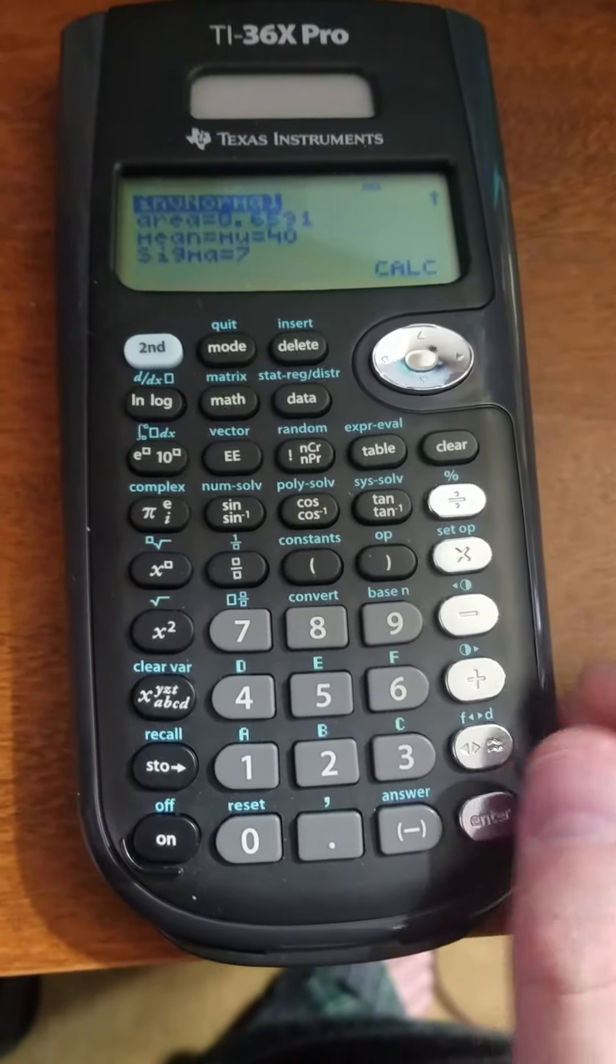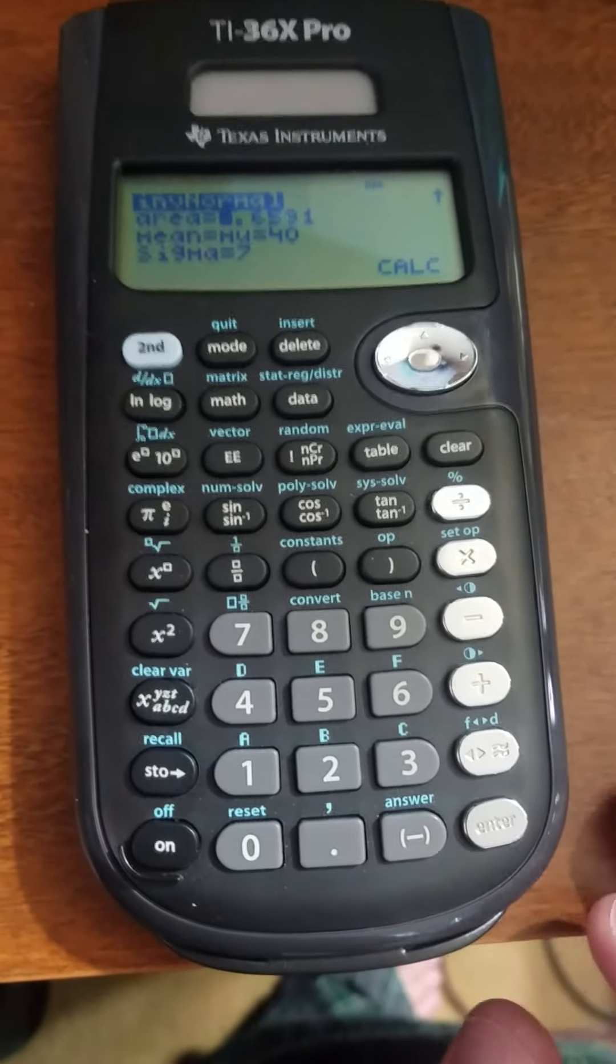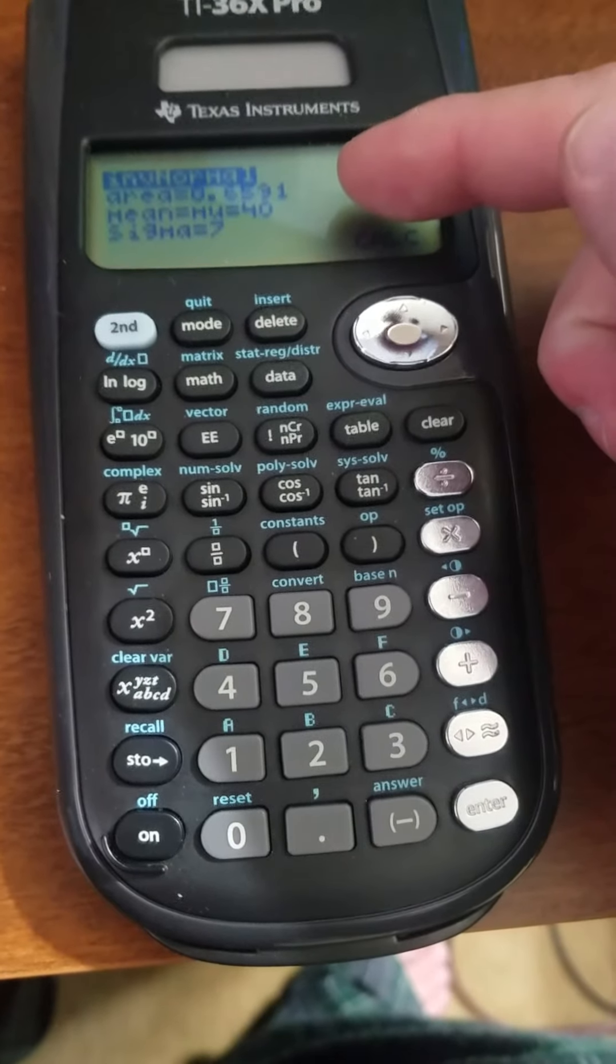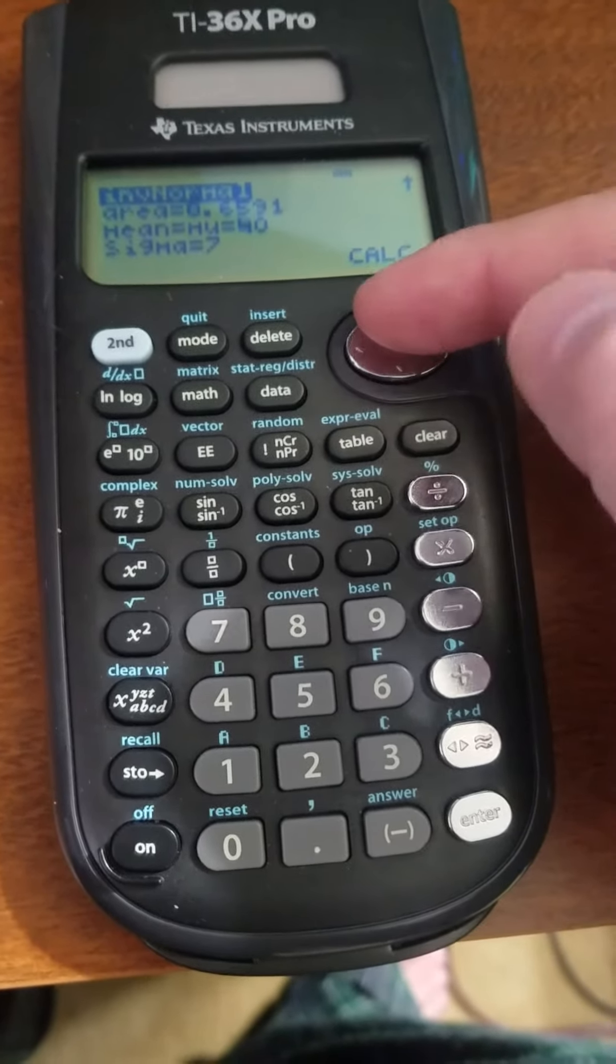So you go in here and you can see it's the same things as you would otherwise see. We have the area, that's the area to the left of our value, and then you do your mean and your standard deviation.